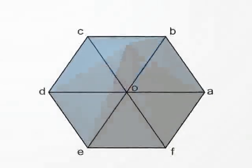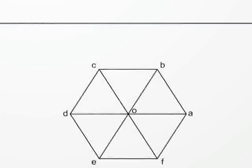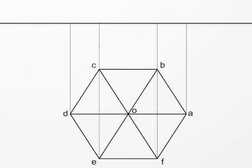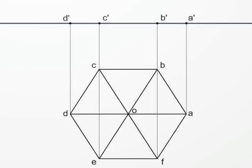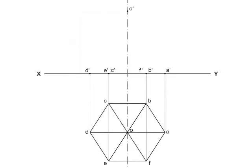Now we are ready with the top view. For the construction of the pyramid, we will draw projections of this base hexagon on line XY. After that, label the points where the projectors are touching XY as A dash, B dash, C dash, D dash, E dash, F dash. Locate the point O dash at a height of 75 mm from the XY line on the vertical center line, and connect all the points to the center O dash.